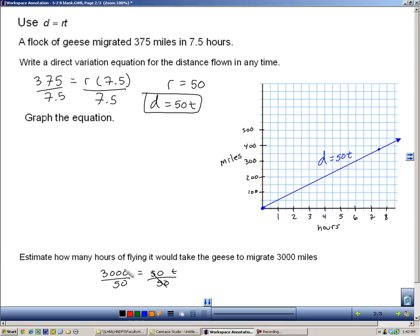So the 50s will cancel. You can cancel the zeros there. So really we're doing 300 divided by 5. So t equals 60. And we're labeling that hours. So it would take the geese 60 hours.